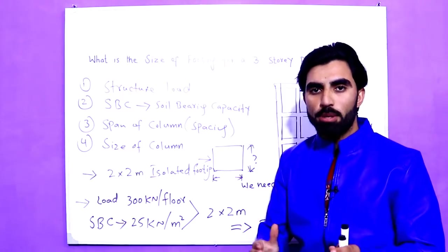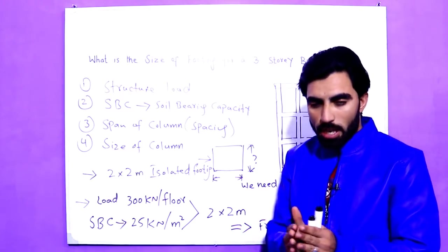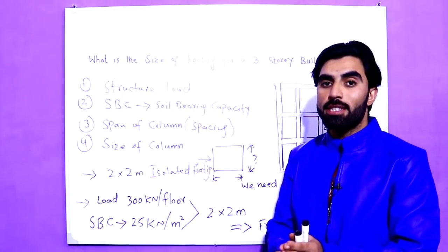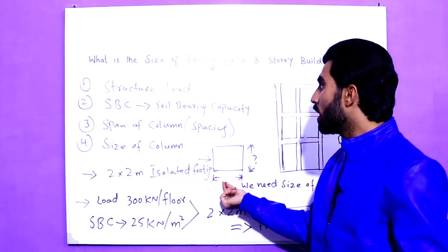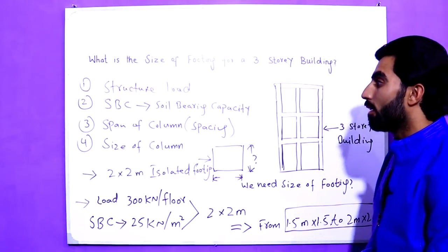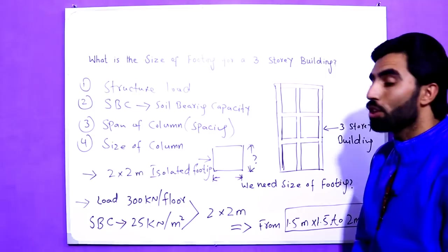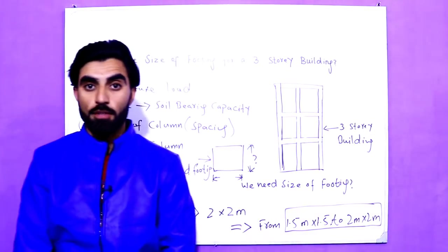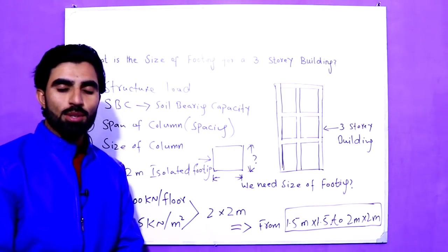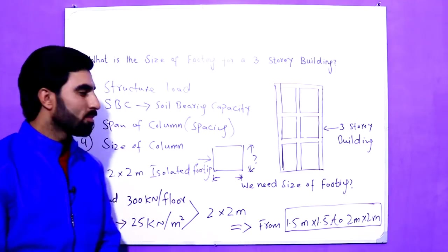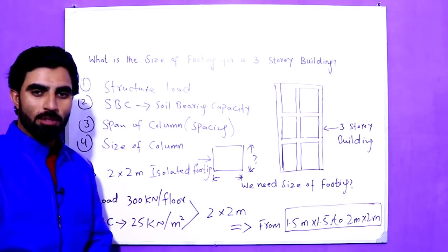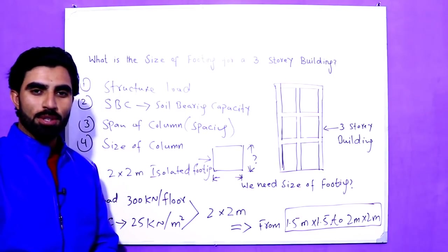Regarding soil bearing capacity: if the soil bearing capacity is good, the footing size can be decreased; if the soil has low bearing capacity, the size of the isolated footing should be increased. These are the key points related to the size of footing for a three-story building. I hope this helps you if you don't have a structural design for your residential house. If you have any questions related to this topic, please comment and I will try to reply. Thanks for watching — see you in the next video, goodbye.